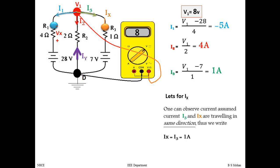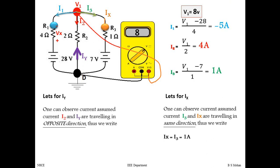For IX, one can observe that current I3 and IX are both flowing in the same direction, so IX = I3 = 1A. For IY in the second branch, I2 flows downwards while IY flows upwards — they are in opposite directions. Therefore IY = −I2 = −4A.